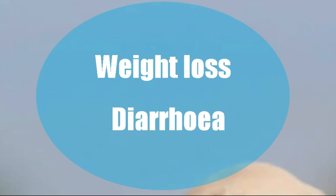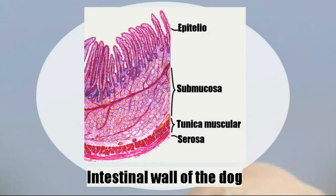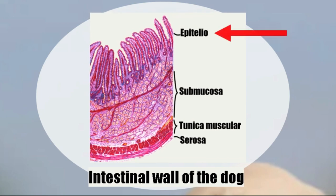There are several causes of diarrhea, and one cause is coccidia. In this image we can see a histological section of the wall of the intestine. This wall has several layers: the submucosa, the muscular layer, and the one that interests us is the epithelium. Causes of diarrhea can be viral, for example parvovirus, distemper, coronavirus, or parasitic such as Ancylostoma, Trichuris, Giardia, and coccidia.